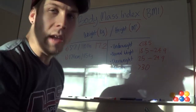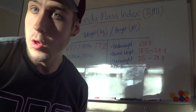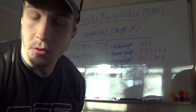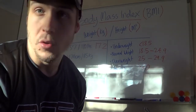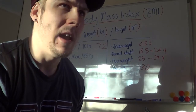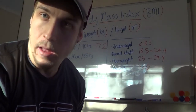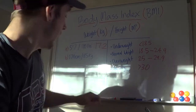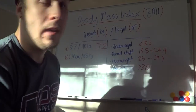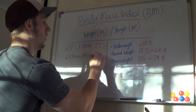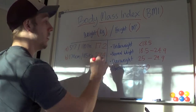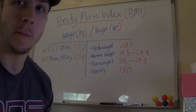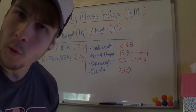Let's work it out. I'm about 85 kilos at the moment, 176 centimeters — that's about five foot nine and roughly 183 pounds. My BMI comes out to 27.4. According to this chart, I'm overweight.